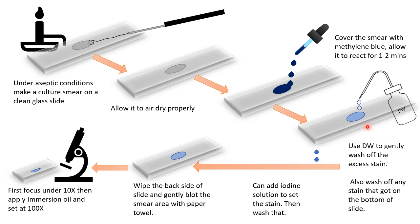After the staining time, wash off the excess stain using distilled water. You can use a wash bottle or wash it under running tap water, but the stream of water should be very low. Use distilled water to gently wash off the excess stain. Also wash off any stain that got onto the bottom of your slide, because that may interfere with your image when observing under the microscope.